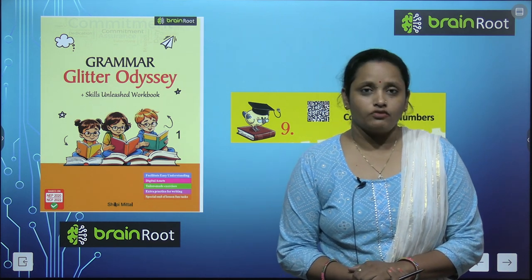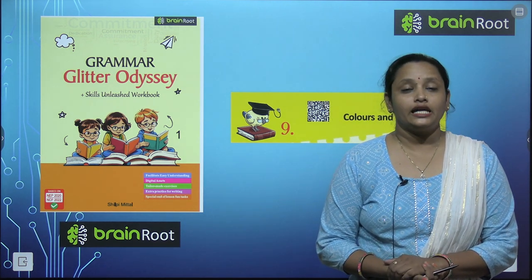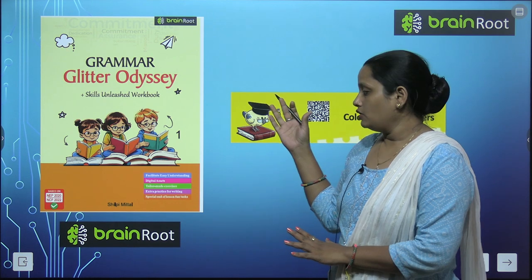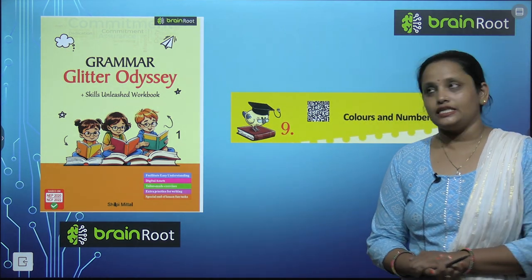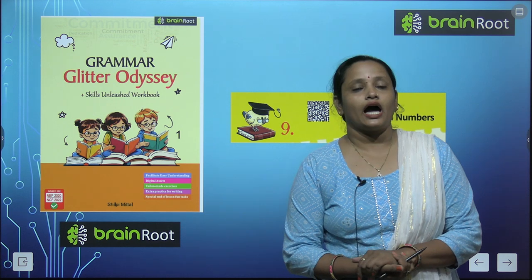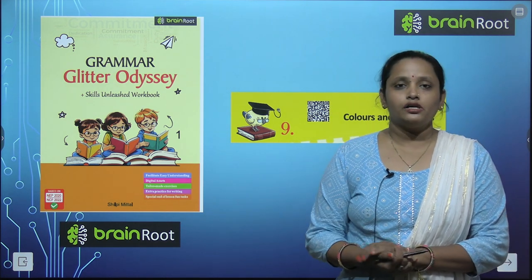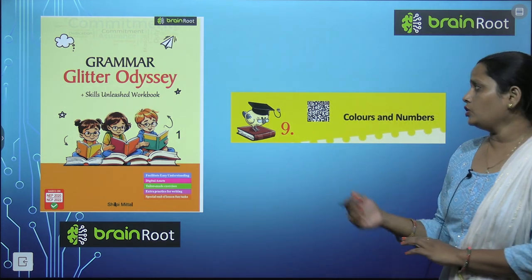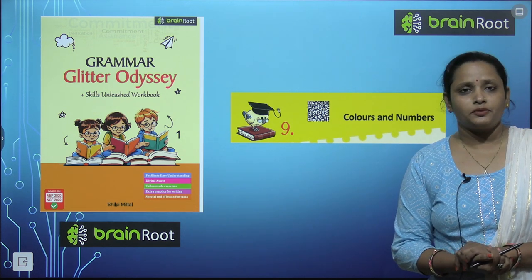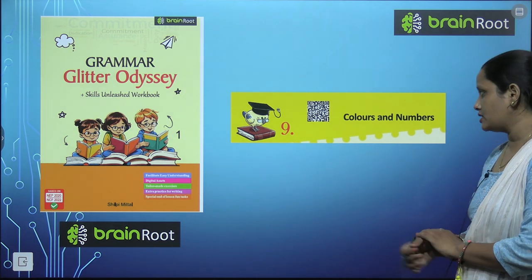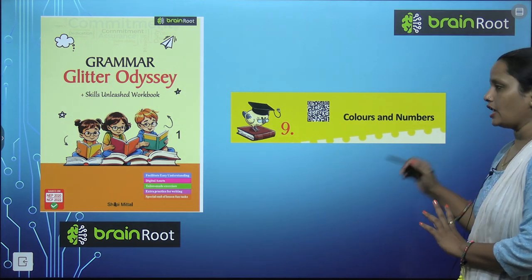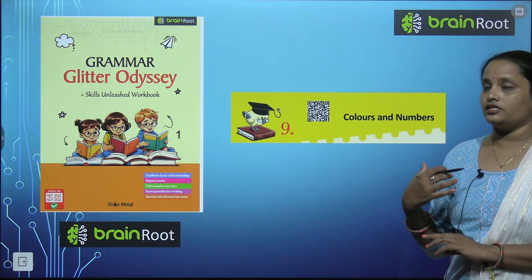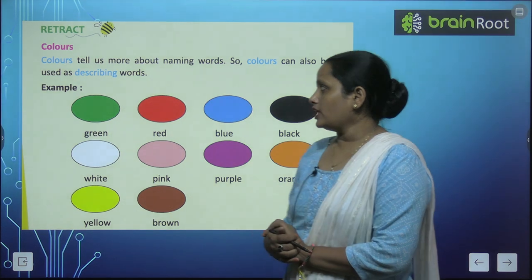Hello kids, welcome back. I am Vandana and we are learning English grammar. Today we are going to learn English grammar from Brain Root Series. This is a book and the name of the book is Grammar Glitter Odyssey — Book 1. Today we are going to learn Chapter 9, and the name is Colors and Numbers.